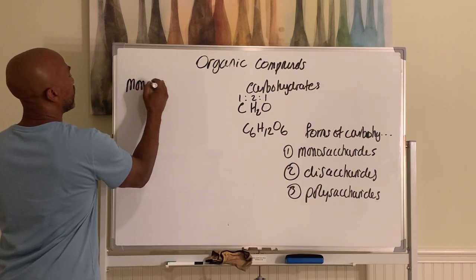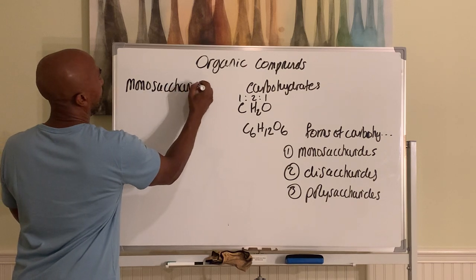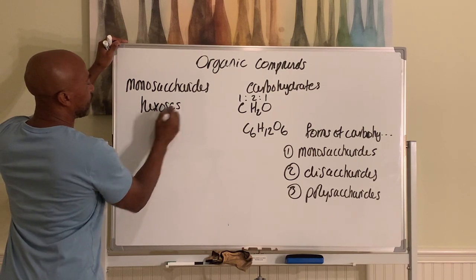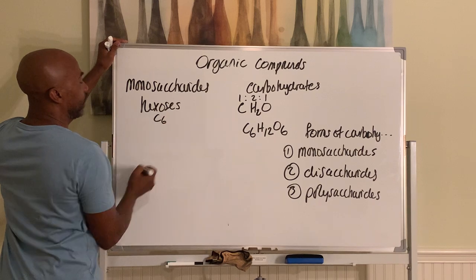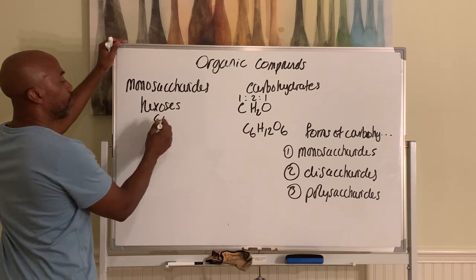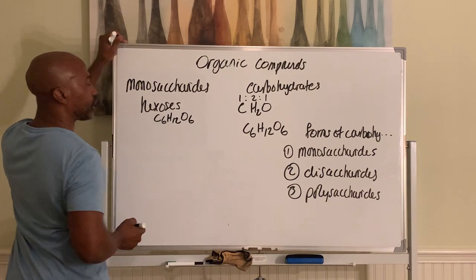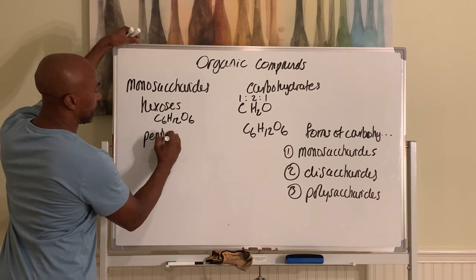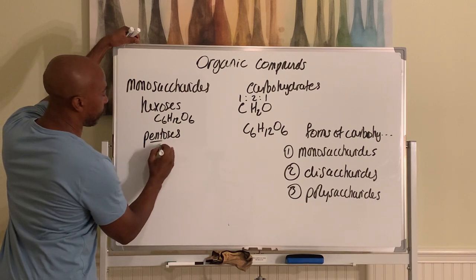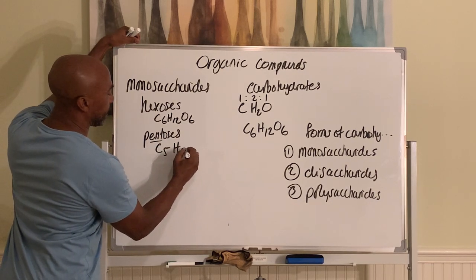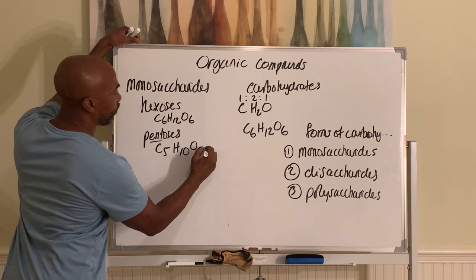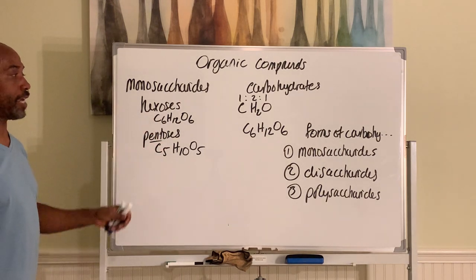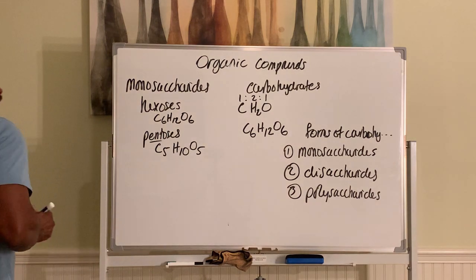Monosaccharides commonly come as hexoses, meaning they have six carbons — hex means six. With six carbons, they must have 12 hydrogens and six oxygens, keeping the one-to-two-to-one ratio. They may also be pentoses, where pent means five — five carbons, 10 hydrogens, and five oxygens. Those are the typical molecular formulas for hexoses and pentoses.